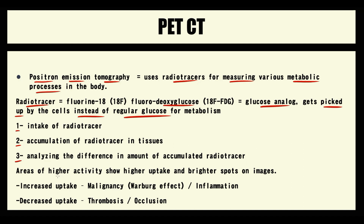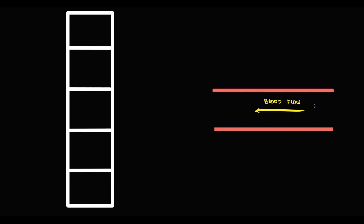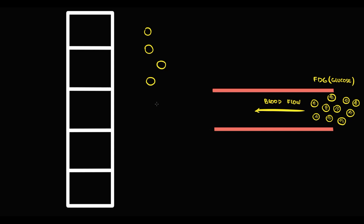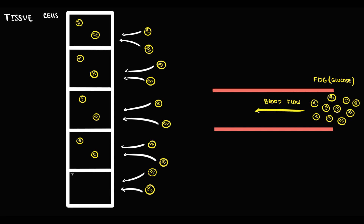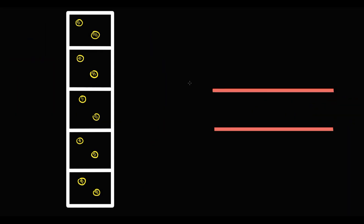Areas with higher metabolic activity that consume more glucose have a brighter, more intense color on PET-CT. To explain the mechanism, cells are supplied by blood vessels that deliver nutrients. When we inject radiotracer, blood flow delivers it along with other nutrients. Cells uptake glucose from the circulation, and if cells are identical they uptake glucose at the same speed. Suppose every cell uptakes two glucose molecules — this normal distribution of radiotracer results in approximately identical brightness of tissue on PET-CT.